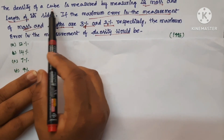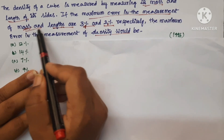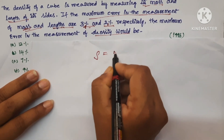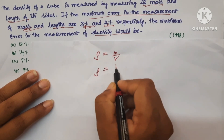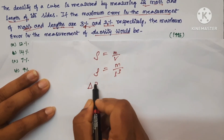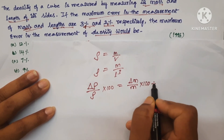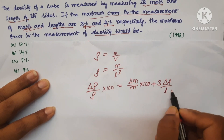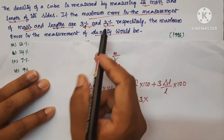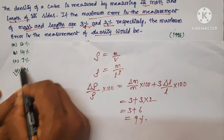Next question: The density of a cube is measured by measuring its mass and length of its sides. If the maximum error in the measurement of mass and length are 3% and 2% respectively, the maximum error in the measurement of density would be. Density = mass / volume = M / L³. So (Δρ/ρ) × 100 = (ΔM/M) × 100 + 3 × (ΔL/L) × 100 = 3 + 3×2 = 3 + 6 = 9%. Option D is the correct answer.